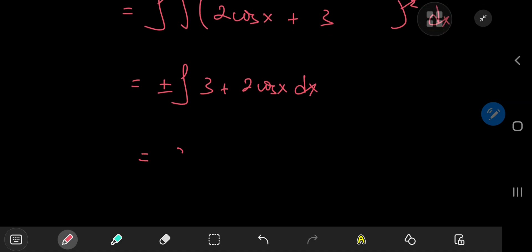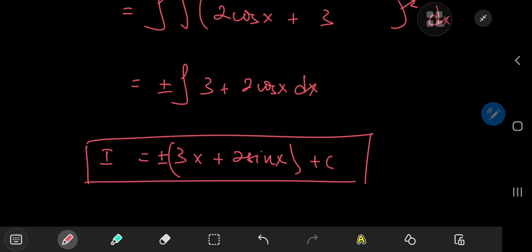Which evaluates out to plus or minus, that is 3x plus 2 times sine x, plus a constant of integration, c. And that wraps up problem 1.